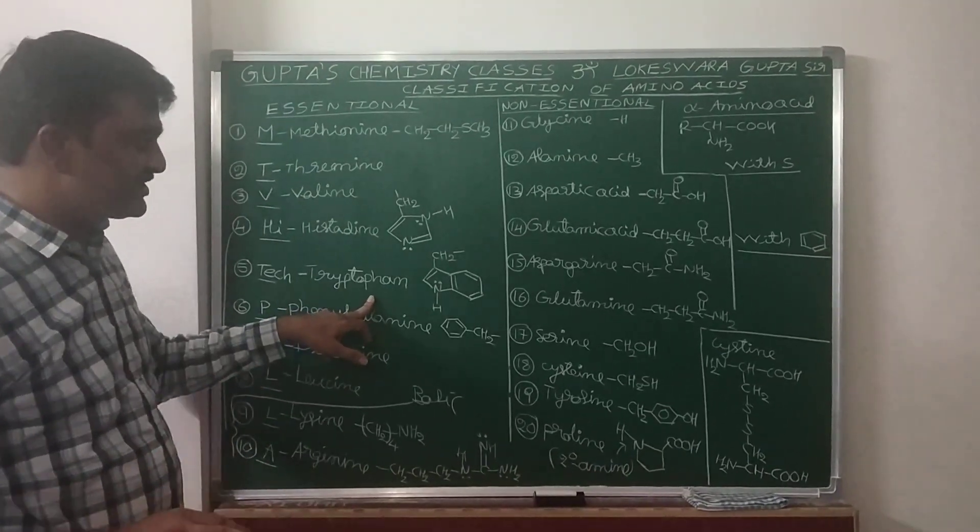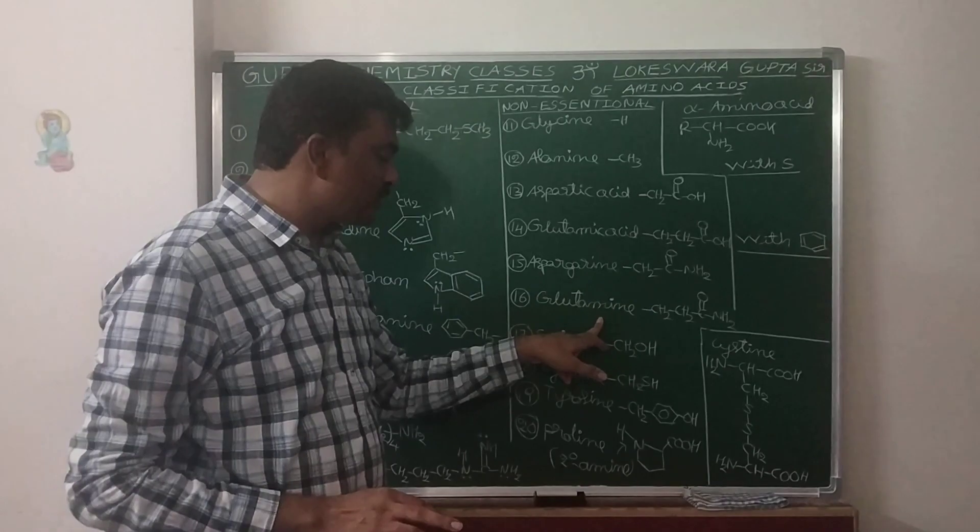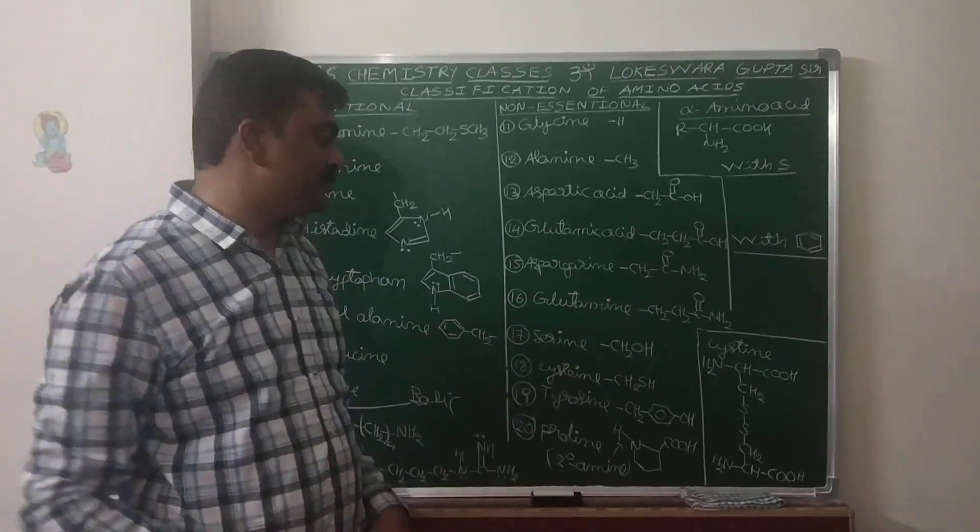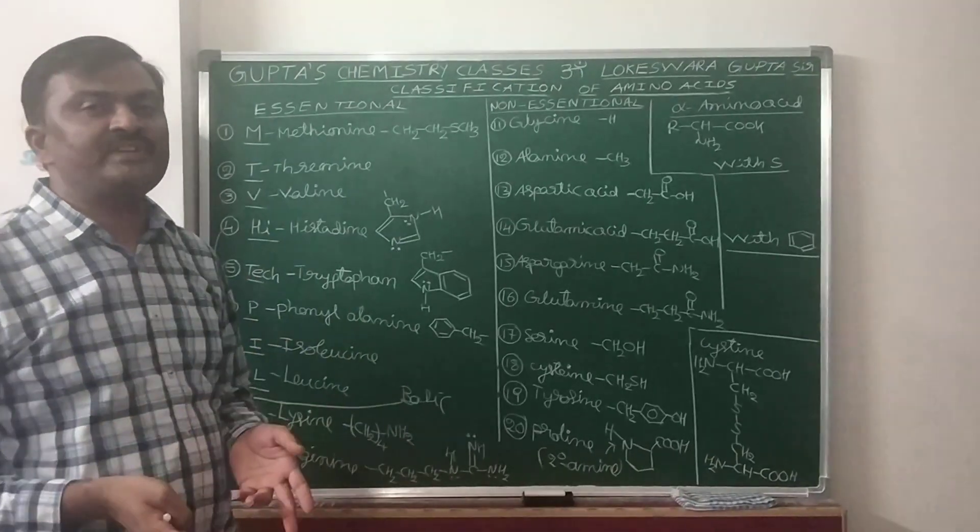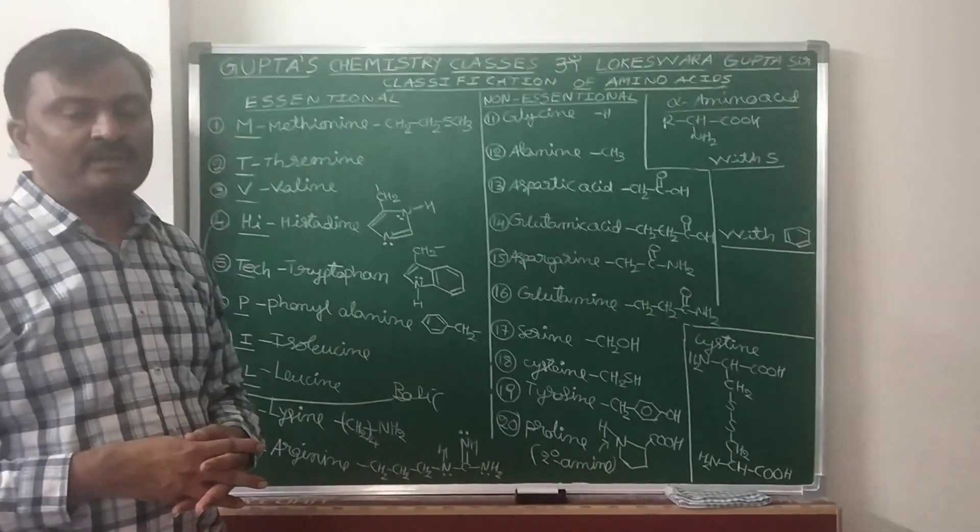Histidine is basic, Tryptophan not basic. Asparagine, Glutamine not basic. So two acidic, three basic, remaining fifteen are neutral alpha amino acids.